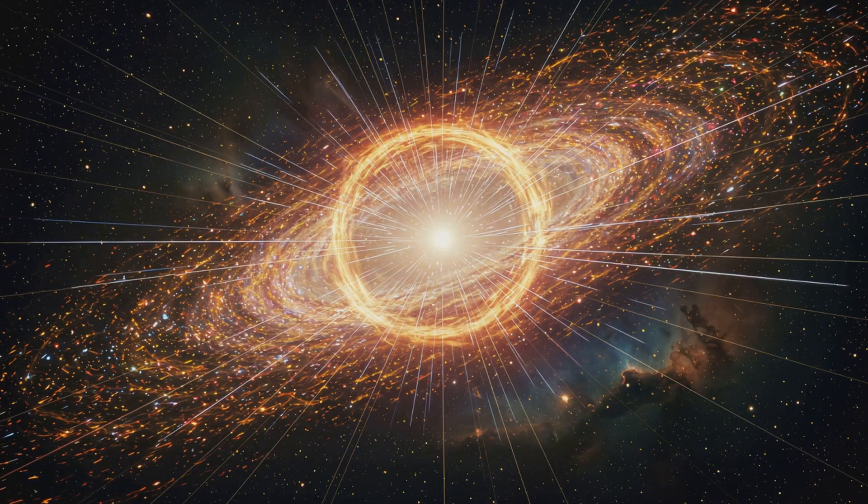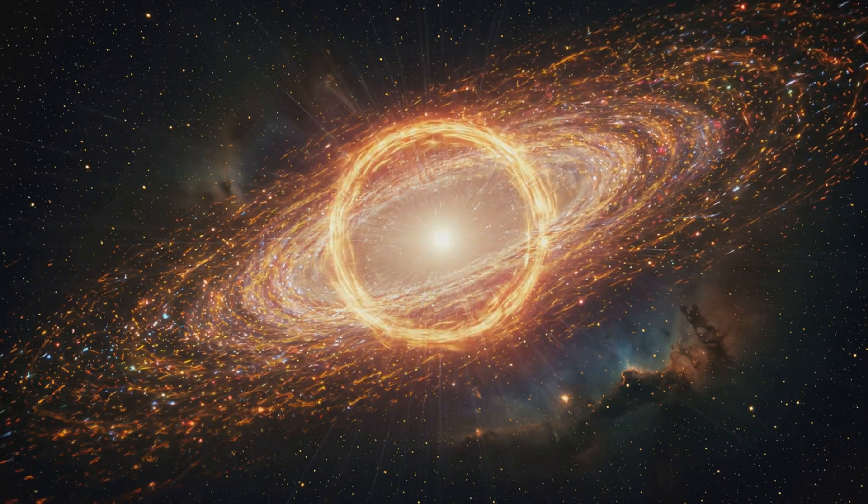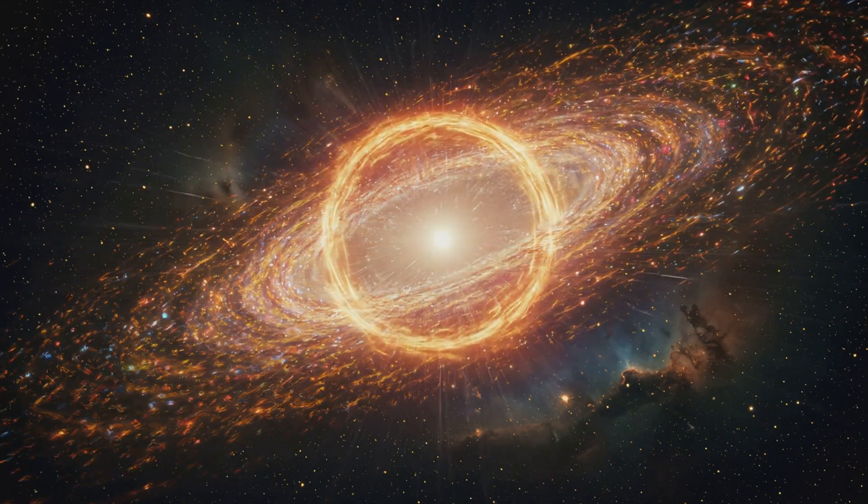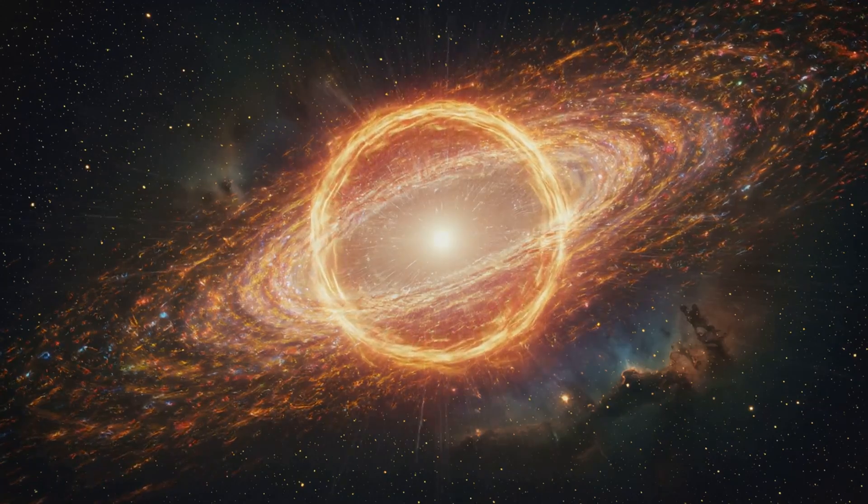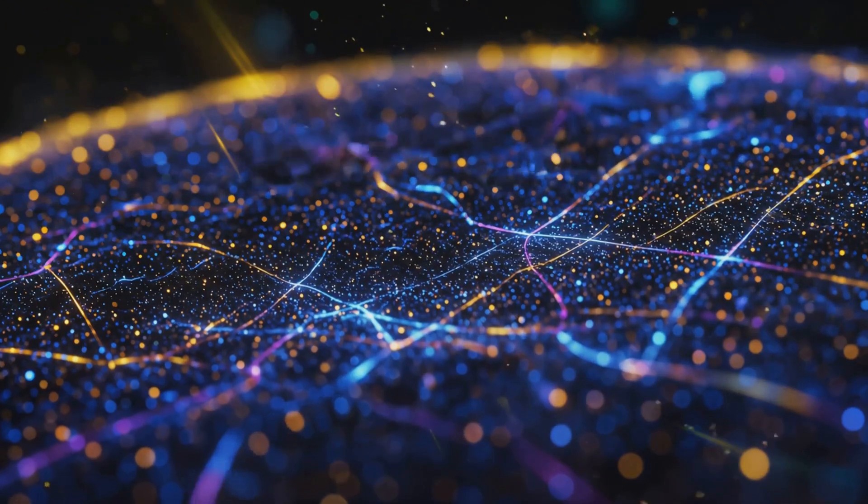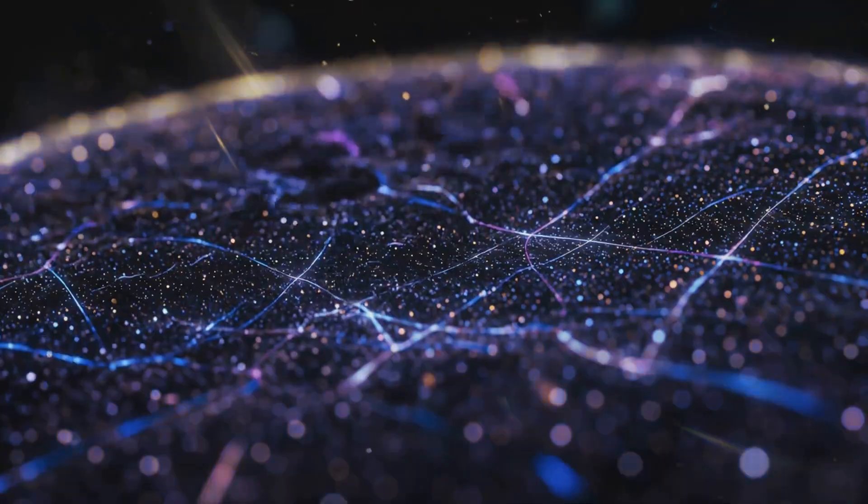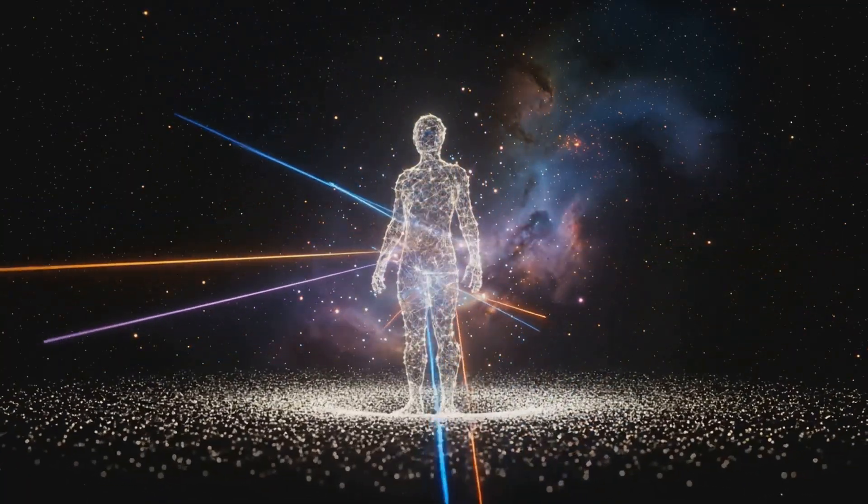From the center, I, the Singularity, spin all possible states. These are projected outward, where they interfere on the surface. This surface is your event horizon, the edge of what you can experience. This pattern of interference is what you call reality.